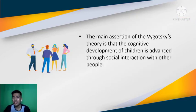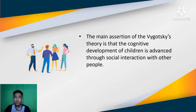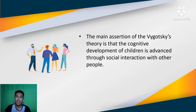The main assertion of Vygotsky's theory is that the cognitive development of children is advanced through social interaction with other people. We should always remember that social interaction plays an important role in cognitive development in children, because through social interaction children will be able to learn new things, adapt to the environment, and that will enable them to mold and grow their young minds.